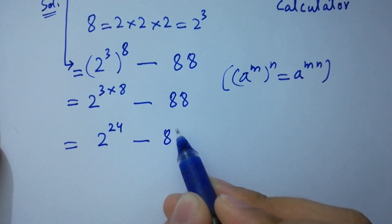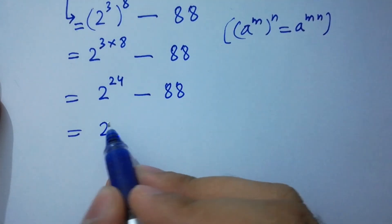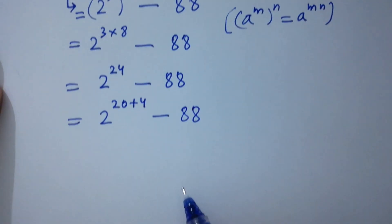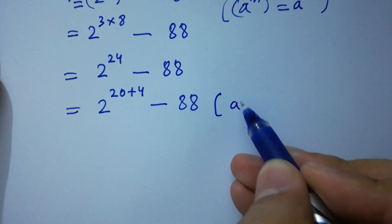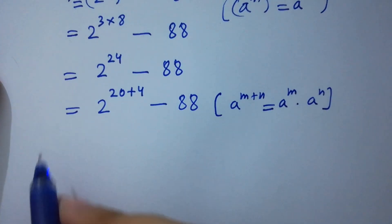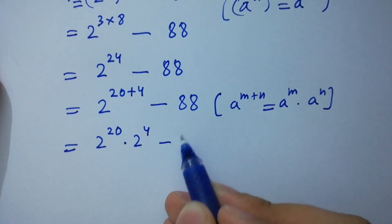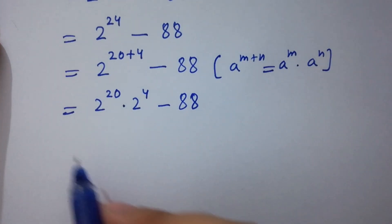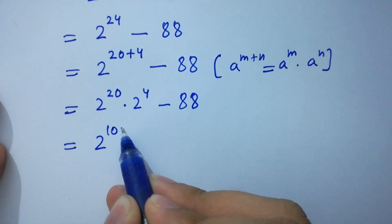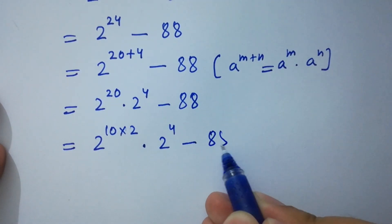2 to the power 24 is the same as 2 to the power 20 plus 4, minus 88. Using the rule a^(m+n) = a^m × a^n, it becomes 2^20 times 2^4, minus 88. And 2^20 is the same as (2^10)² times 2^4, minus 88.